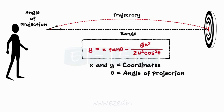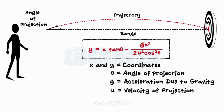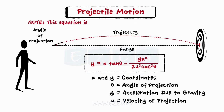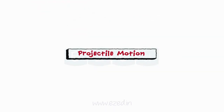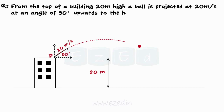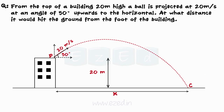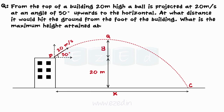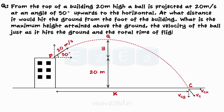The equation of the path of a projectile is given by the following equation, where x and y are the coordinates and theta is the direction of the path of the projectile. From the top of a building 20 meters high, a ball is projected at 20 meters per second at an angle of 50 degrees upwards to the horizontal. At what distance would it hit the ground from the foot of the building? What is the maximum height attained above the ground? Also find the velocity of the ball just as it hits the ground and the total time of flight.